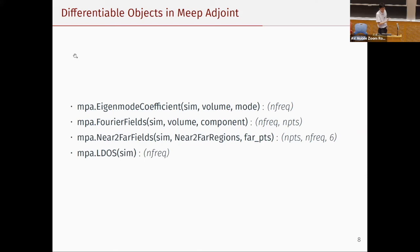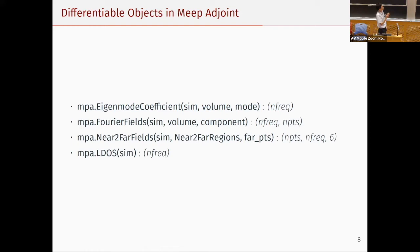There are other supported differentiable quantities in MEEP adjoint. Specifically: EigenmodeCoeff, which is the field at the power expanded by a source; and also DFT fields. The parentheses indicate the shape of each quantity. For EigenmodeCoeff and LDOS it's just an array at each frequency of interest. For near-to-far, as mentioned, it's a 3D array — first axis is points, second is frequency, and third is components.